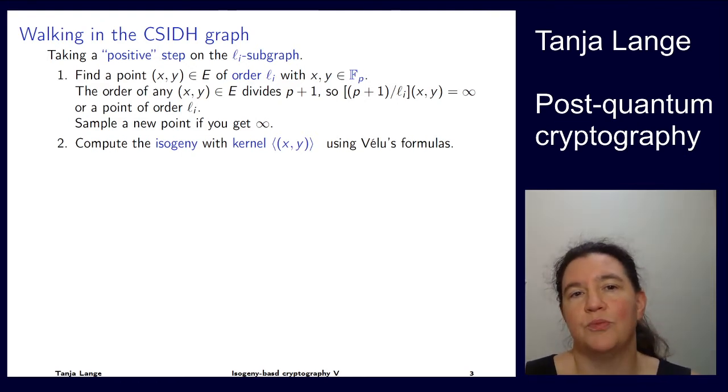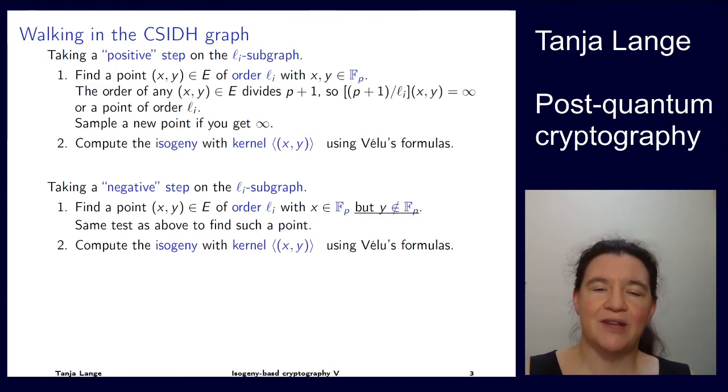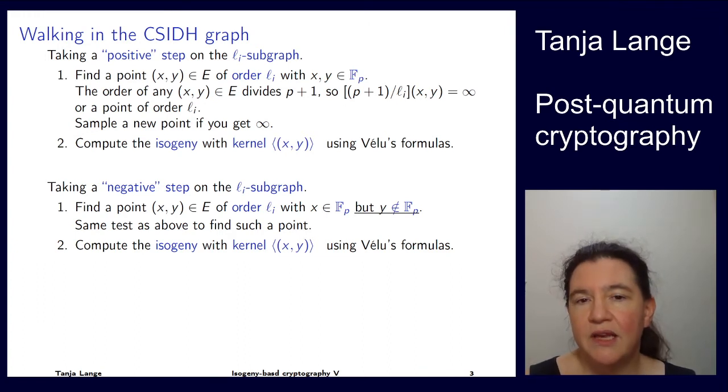For a positive step we find such a point on E, and if you want to do a negative step then we're going for this quadratic twist. We're effectively working over a quadratic extension, just we don't see the y, so doing a negative step means taking these other points on the wrong curve.